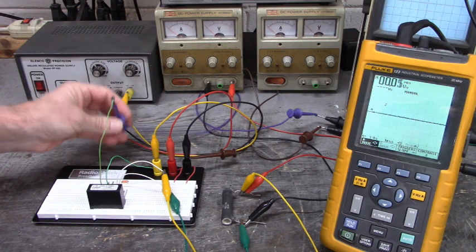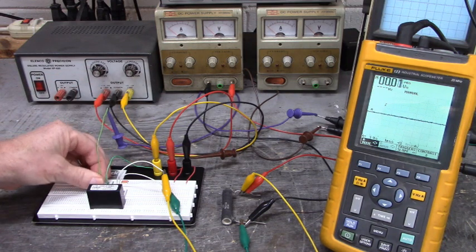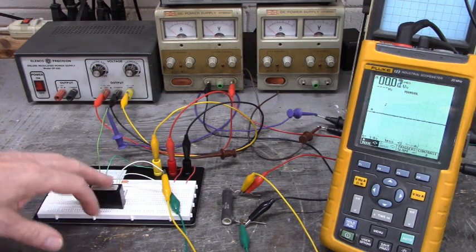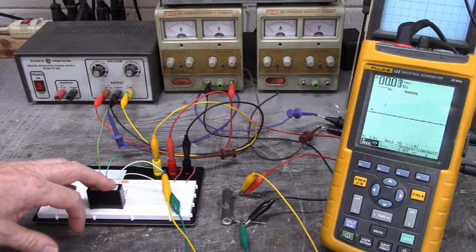Now the Fluke oscilloscope is looking at the first output. There are two inputs and two outputs on this unit right here.